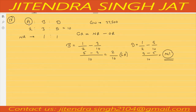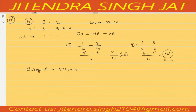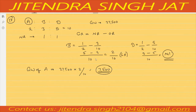A is retiring from the firm. Let's calculate the goodwill of A. Goodwill of A is 37,500 multiplied by 2/10, so goodwill of A is 7,500. And who will give 7,500 goodwill to A? The one who is gaining — only B is gaining. So B will give 7,500.